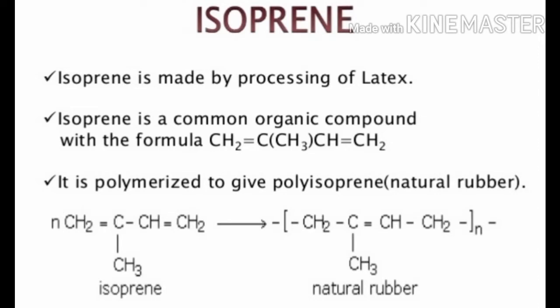Polyisoprene is nothing but natural rubber. A number of isoprene units combine and undergo polymerization to form natural rubber. Remember: in isoprene the double bond is at the last position, but in natural rubber the double bond is in the middle — the last double bond is not present.